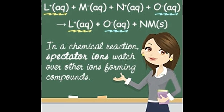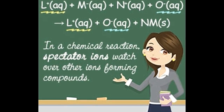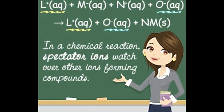PbI₂ is the precipitate in this reaction. It is solid, and hence cannot be separated into ions. Since NO₃⁻ (aq) and K⁺ (aq) remain unaltered during and after the equation, they can be eliminated from the net ionic equation. The final net ionic equation after elimination of the spectator ions yields a solid precipitate: Pb²⁺ (aq) + 2I⁻ (aq) → PbI₂ (s). Note: 'aq' and 's' indicate aqueous and solid state respectively.